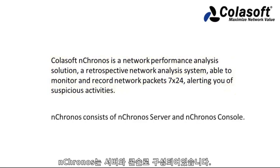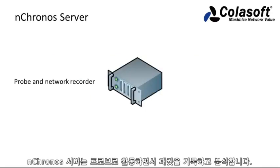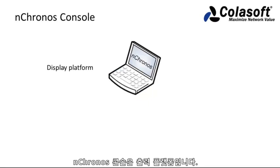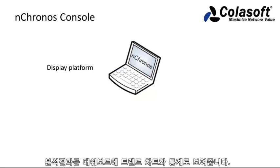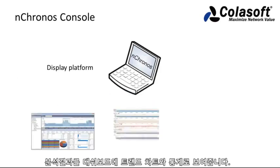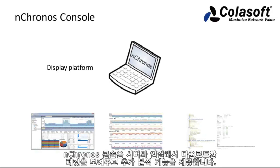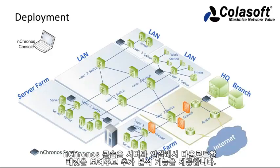Nchronos consists of Nchronos Server and Nchronos Console. Nchronos Server works as a probe and recorder to capture, analyze, and store all network packets and related data. Nchronos Console is a display platform to show analysis results with dashboards, trend charts, and comprehensive statistics. Nchronos Console connects with Nchronos Server to display data and download packets.